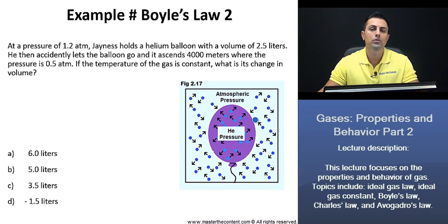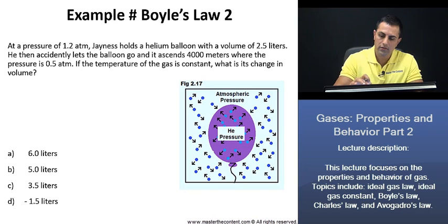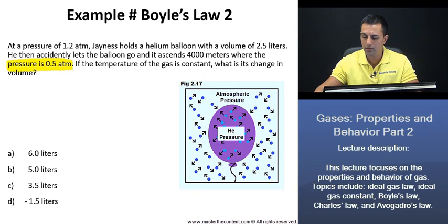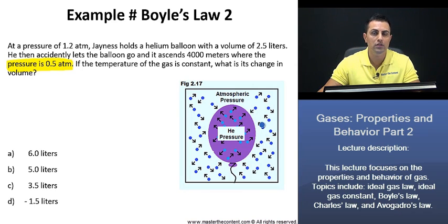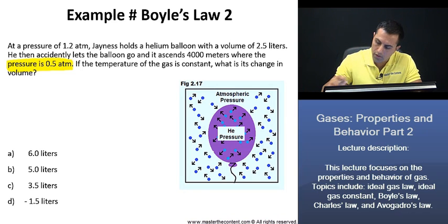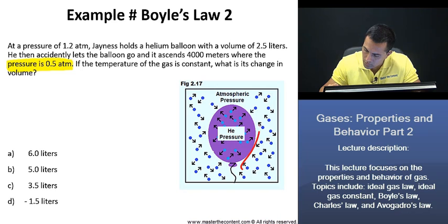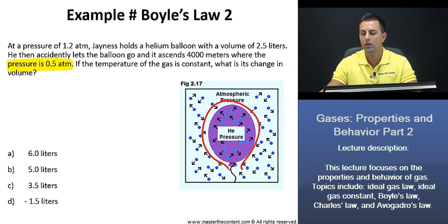Now, as the balloon ascends 4,000 meters, it's telling us here that the pressure is going to be 0.5 atmospheres. Thus, the pressure decreased. Then that means that the air pressure here is not pushing back as much on the balloon as it did at lower altitudes. Thus, due to the fact that there's lower pressure on the balloon, we know that the balloon is going to expand and the change in volume should be positive.